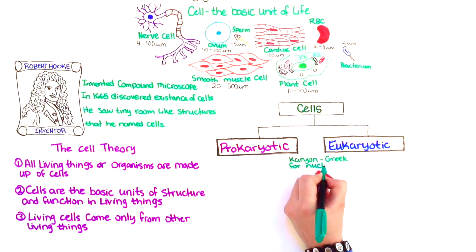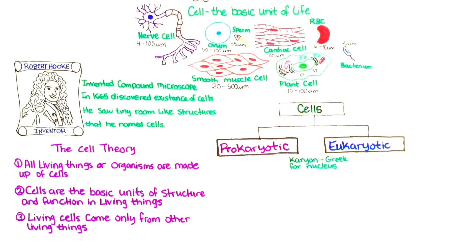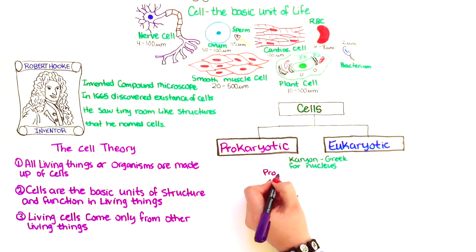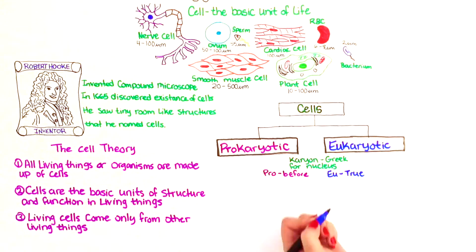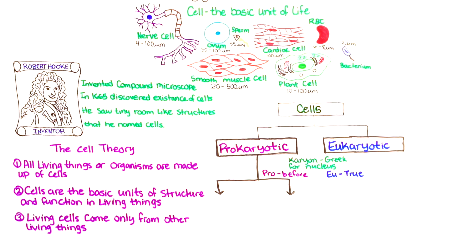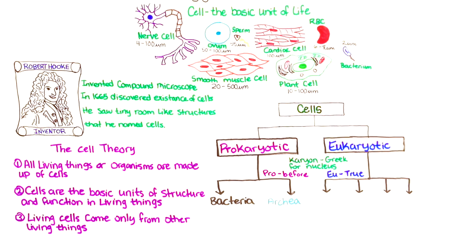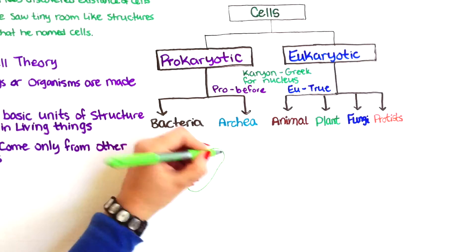Karyon is a Greek word that means nucleus, pro means before, and eukaryotic. Prokaryotic cells can be divided into bacteria and archaea, while eukaryotic cells are further divided into animal, plant, fungi, and protists.